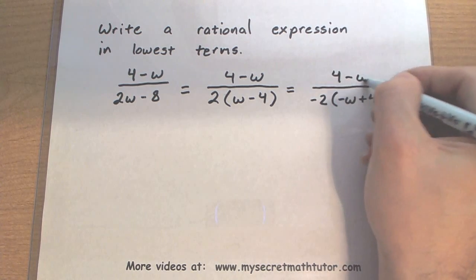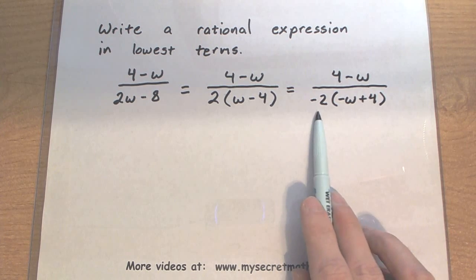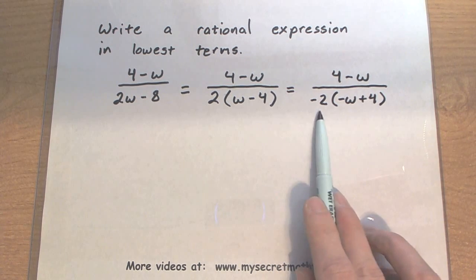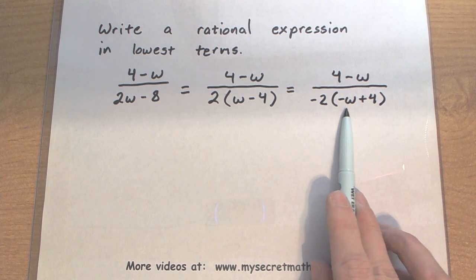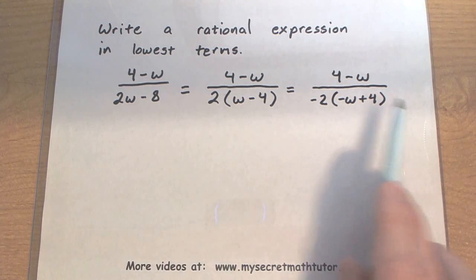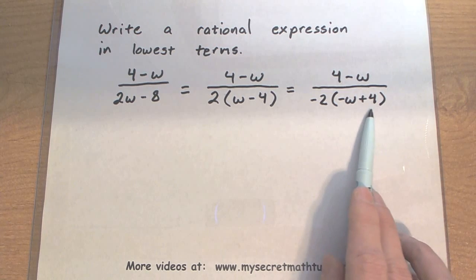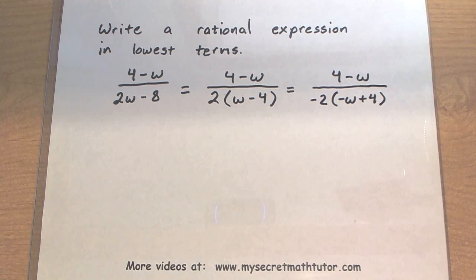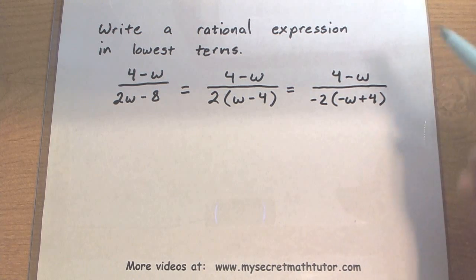Let's see why this is really okay. So let's double check this by multiplying it back in. Negative 2 times a negative w gives us a positive 2w. That's what we originally started with. Negative 2 times 4, that's negative 8. Yep, that's what we originally started with, so I haven't really changed anything.